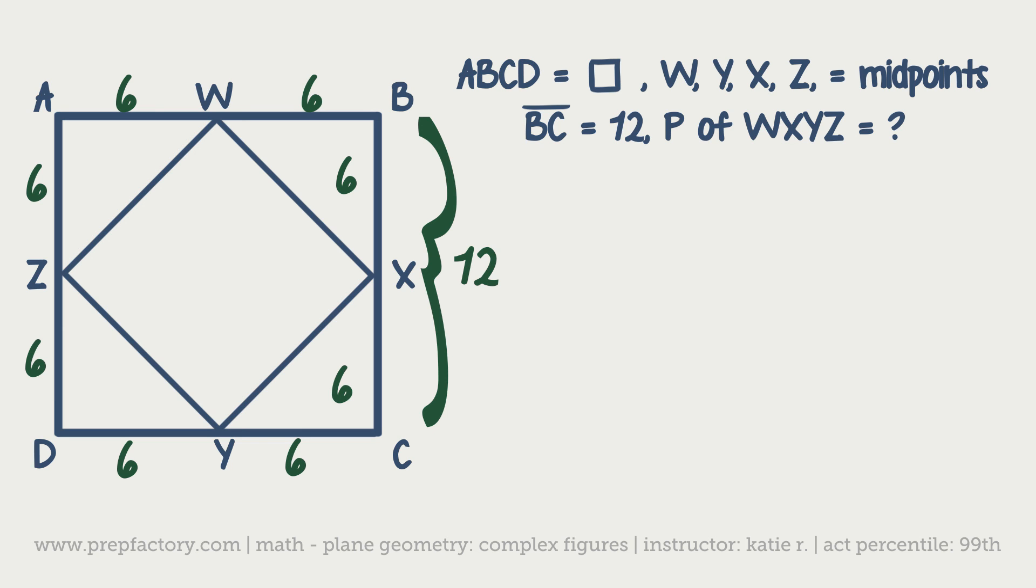But unfortunately that's not exactly what they want. They want the perimeter of your inner square, but luckily knowing that we can use triangles to help us, we're in really good shape. Let's go ahead and take triangle ZDY.